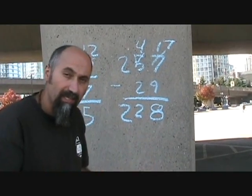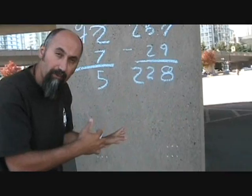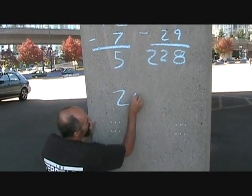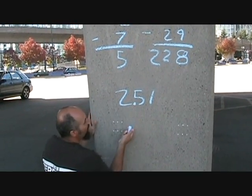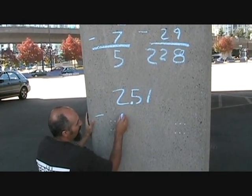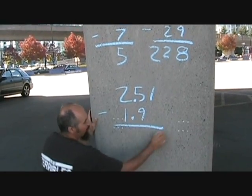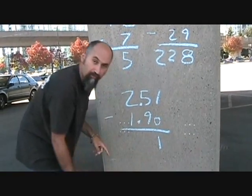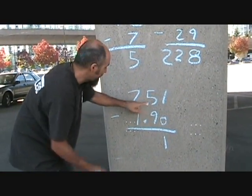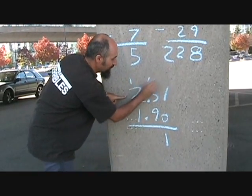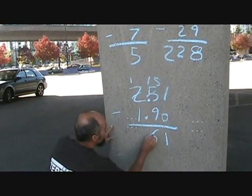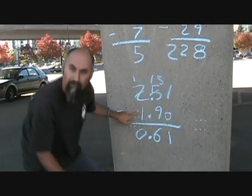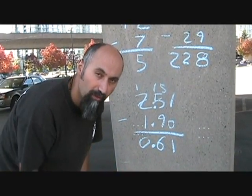And with the decimals it works the same way. Line up your decimals and you continue the same way you did with the addition. So if you're doing 2.51 minus 1.9, the way you do this is there's nothing to subtract here, so that's just a 0. That just becomes 1. 9 from 5 you can't take, so you borrow 1 from this. This becomes 15. 15 minus 9 is 6. 1 minus 1 is 0, and your decimal place goes here. That's subtraction. Let's go on to multiplication.